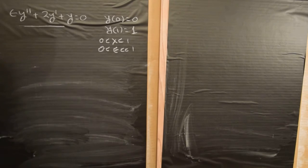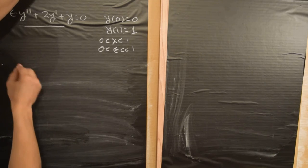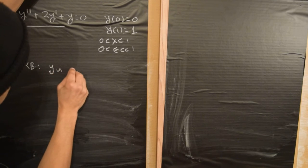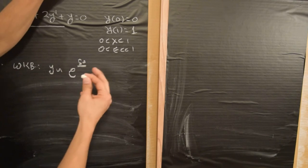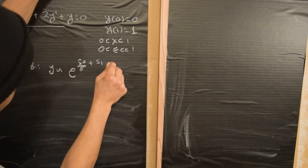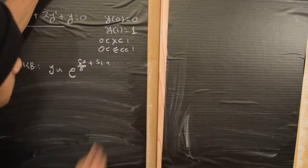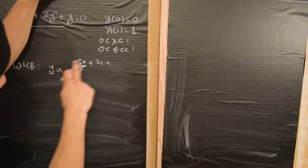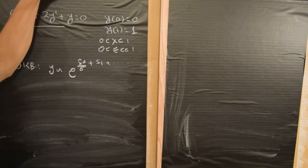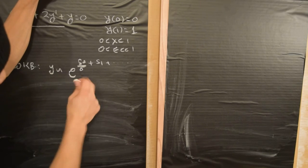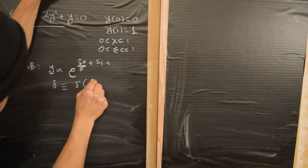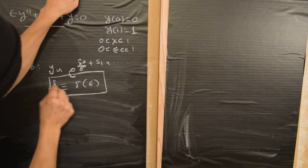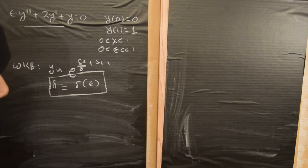In order to use the WKB method, if you recall from the previous video, we need to make the ansatz that the solution y can be written as e to the power of an expansion in powers of some function s of x, which looks like s_0 plus s_1 plus higher order terms. We need to figure out all these functions s_0, s_1, up to the number of terms we want to retain, and also figure out the dependence delta as a function of the small parameter epsilon.